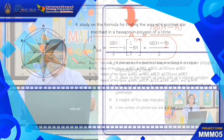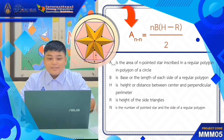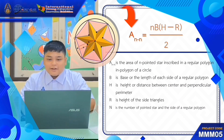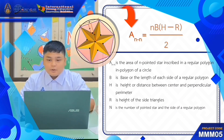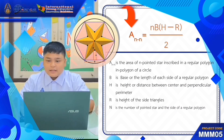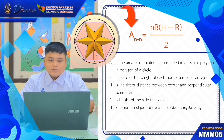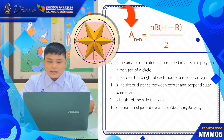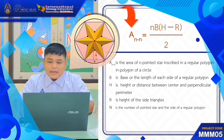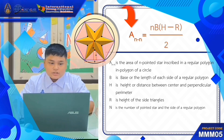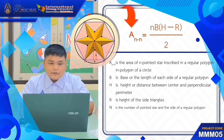From the study of the formula for finding the area of 3, 4, 5, and 6-pointed stars inscribed in an equilateral triangle, a square, a pentagon, and a hexagon in a polygon on a circle, the conclusion presents the relation of the formulas for finding the area of these figures in the following table.